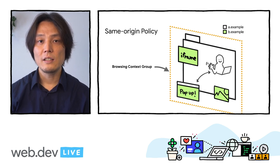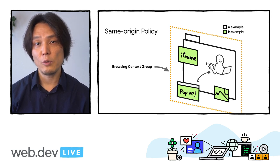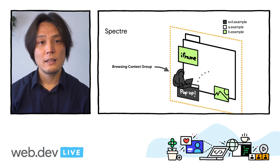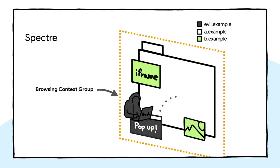The same-origin policy has been doing a good job keeping the web a safe place until Spectre was discovered. Spectre is a vulnerability found in CPUs that enables malicious websites to read memory contents across origin boundaries. This vulnerability can be exploited via features that can act as high-precision timers. This leaves cross-origin resources that are shared in a single browsing context group at risk, even if they are protected by the same-origin policy — Spectre attacks can bypass that border.